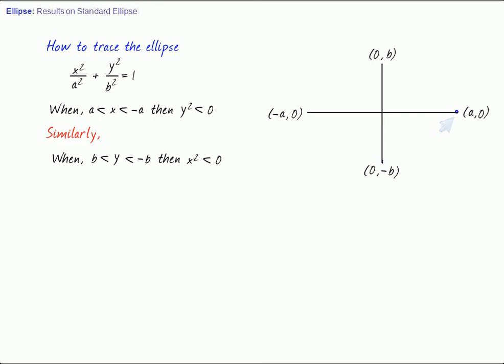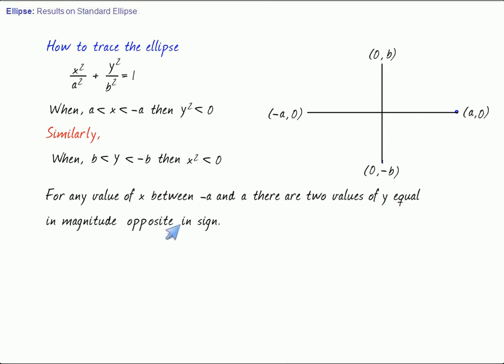Now, for any value of x between minus a and a, there are 2 values of y, equal in magnitude, opposite in sign. So ellipse is symmetrical about x-axis. Whatever shape is there above the x-axis, similar shape is there, or image shape is there below the x-axis. Similarly, it is symmetrical about y-axis. In fact, both powers of x and y are even. So therefore, it is symmetrical about both axes.